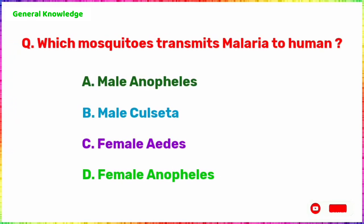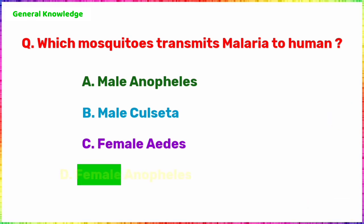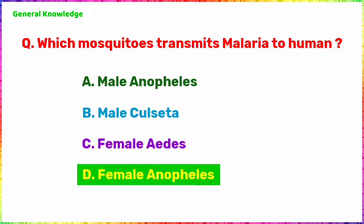Which mosquito transmits malaria to humans? The correct answer is Option D, Female Anopheles.